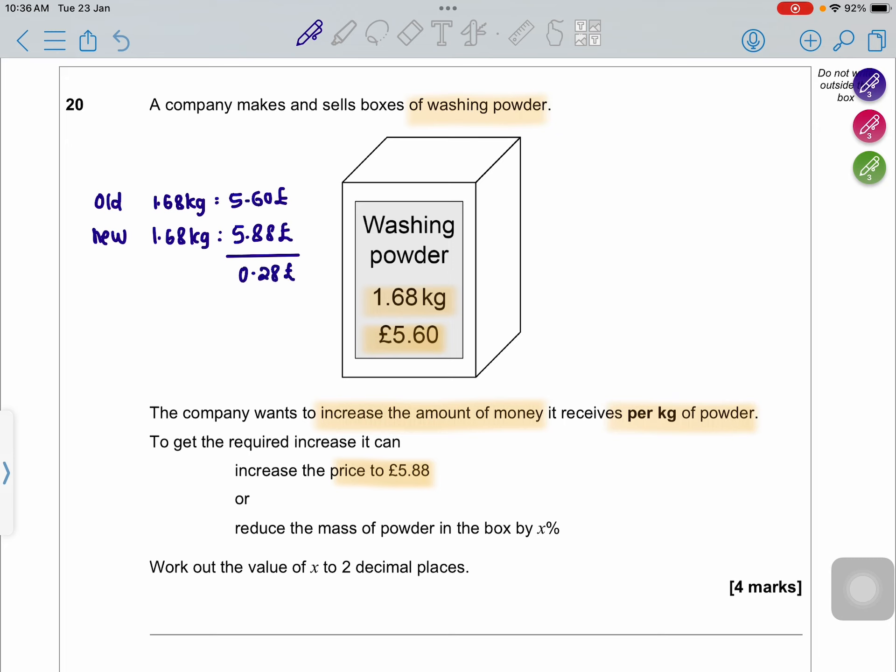If there is a recession, what will you tell your seller? You might say, 'I am willing to pay £5.60 but can you give me a reduced amount of the powder?' There are two options: you don't want to pay extra, so you tell the seller to reduce the amount of powder by x percent, and we need to find this percentage.